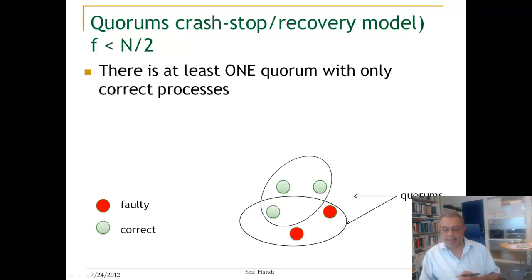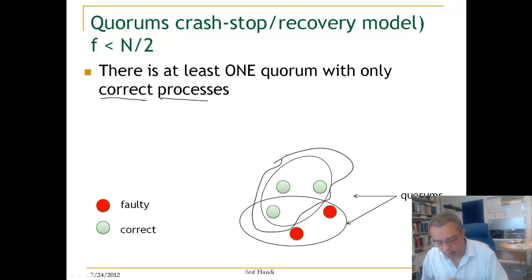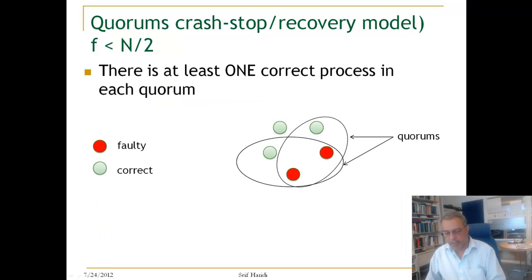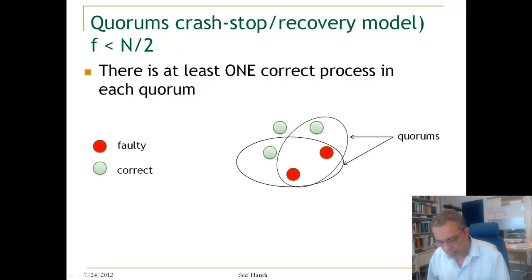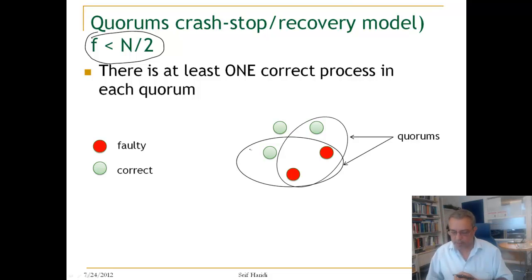Another property is that there is at least one quorum consisting only of correct processes. A third property is that there is at least one correct process in each quorum. Because F is less than half of N, there will always be at least one correct process in each quorum.